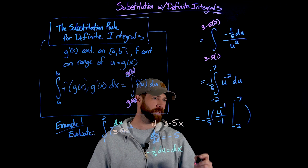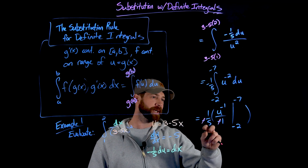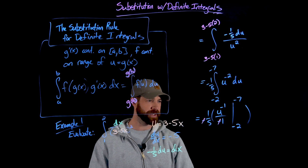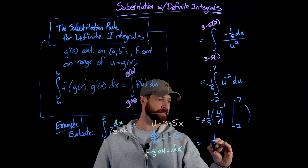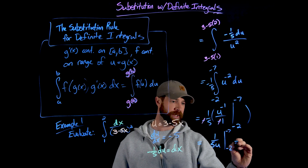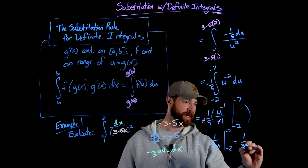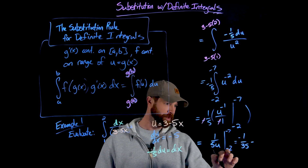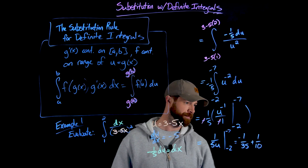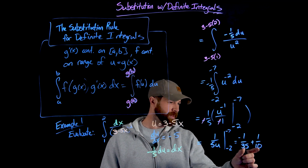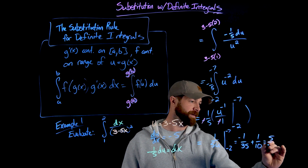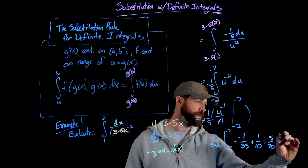The two negatives cancel, giving one-fifth times 1 over u, evaluated from negative 7 to negative 2. Plugging in: 1 over (5 times negative 2) gives negative one-tenth, and 1 over (5 times negative 7) gives negative one-thirty-fifth. So we get negative one-thirty-fifth minus negative one-tenth, which equals negative one-thirty-fifth plus one-tenth. With a common denominator of 70, this is negative two-seventieths plus seven-seventieths equals five-seventieths, which reduces to one-fourteenth.